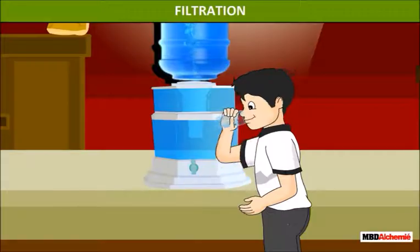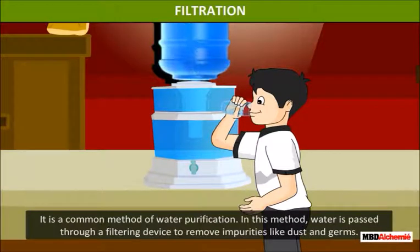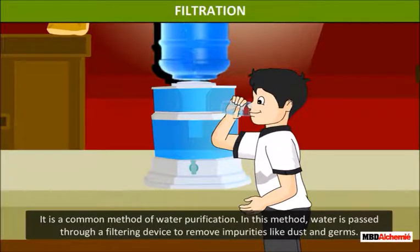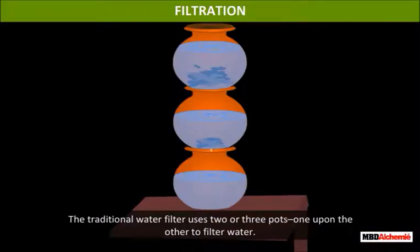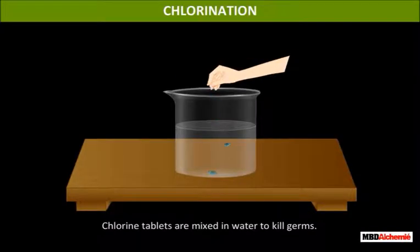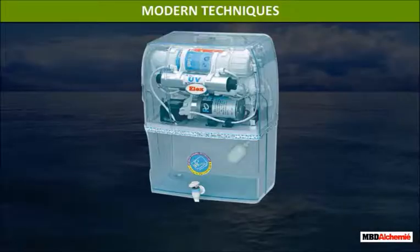Filtration: it is a common method of water purification. In this method, water is passed through a filtering device to remove impurities like dust and germs. The traditional water filter uses two or three pots one upon the other to filter water. Chlorination: chlorine tablets are mixed in water to kill germs.